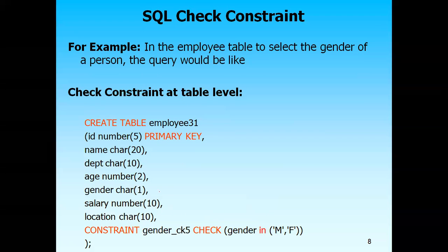Here is the same example for the table level syntax. After declaring all the columns, at the last you mention: 'constraint constraint_name check(gender in (''M'', ''F''))' — specifying which field of this table you want to apply the check constraint to. This is the table level syntax for check constraint.